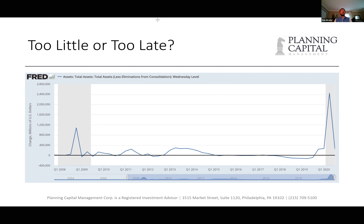What we're looking at here is essentially a temporary disruption — this was not the collapse of the housing market, not a collapse in the business cycle, but a temporary disruption in economic activity due to shutdowns. Not that it's not serious, but it really didn't have anything to do with the underlying fundamentals of the economy.